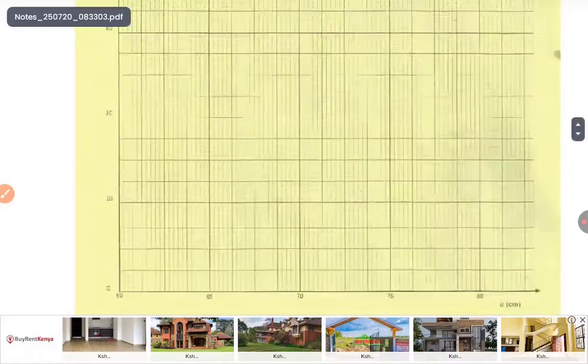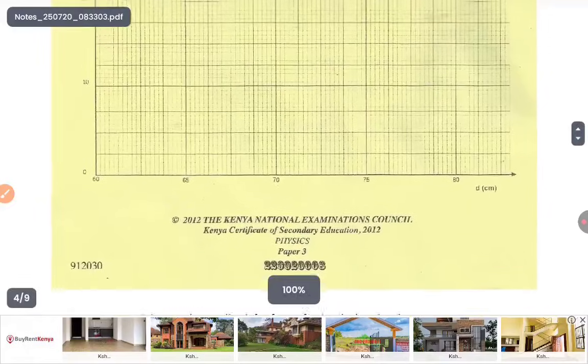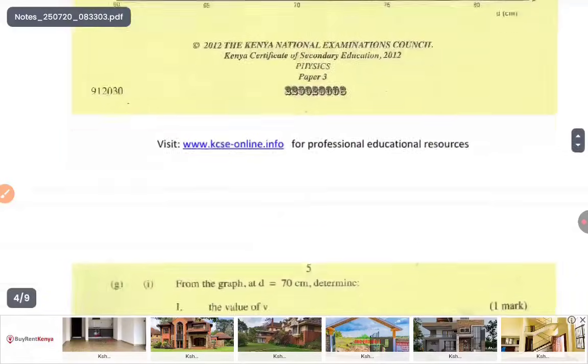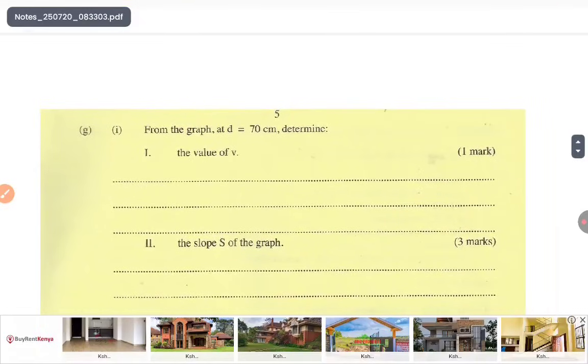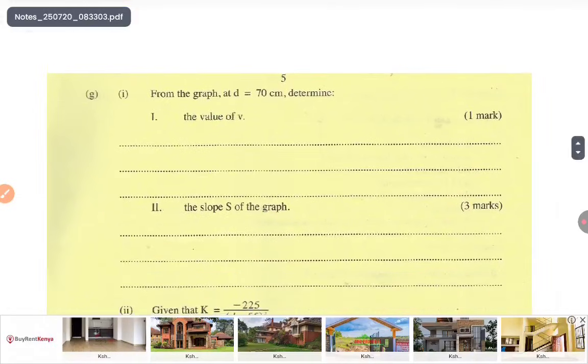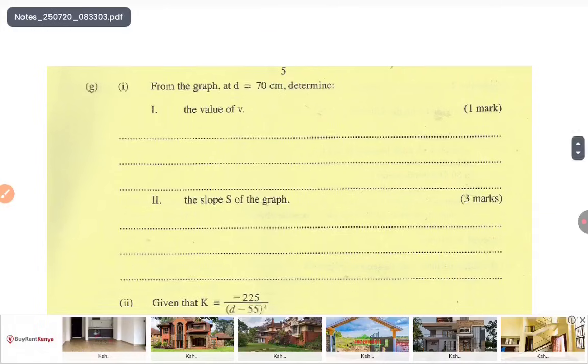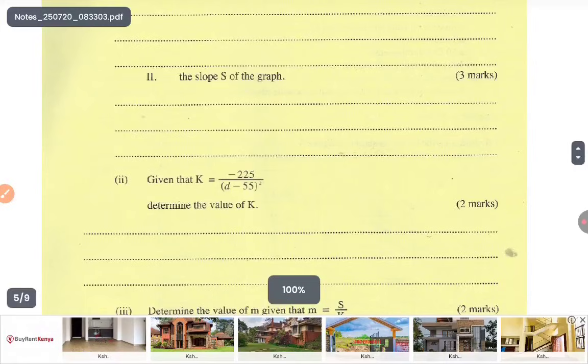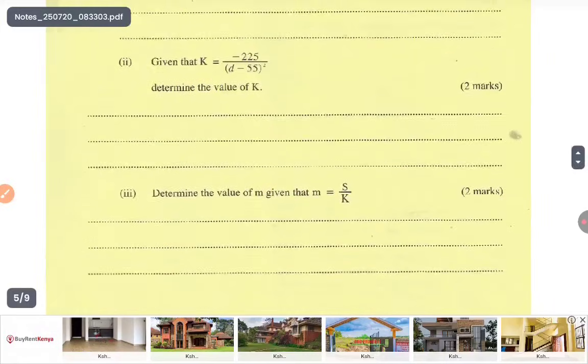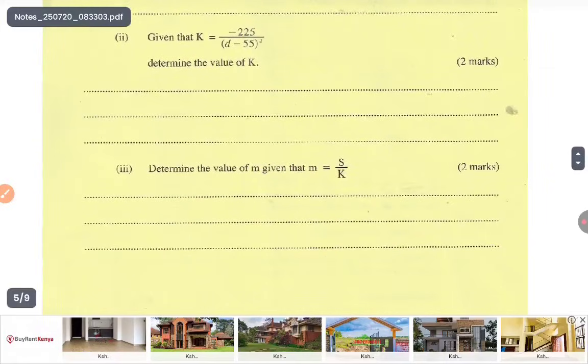Draw the graph. From the graph, determine when D is equal to 70, determine the value of V. The slope of the graph, you find the gradient. Given that the constant K is this, determine the value of K. Determine the value of M, given that M is equal to this. That was question one.